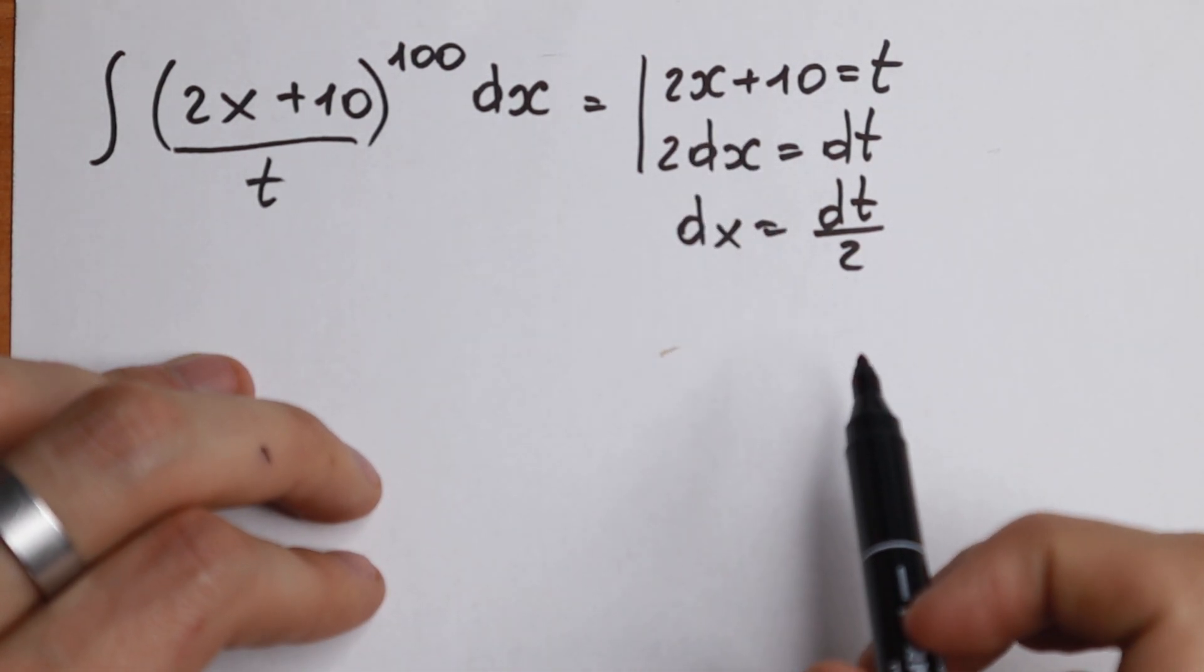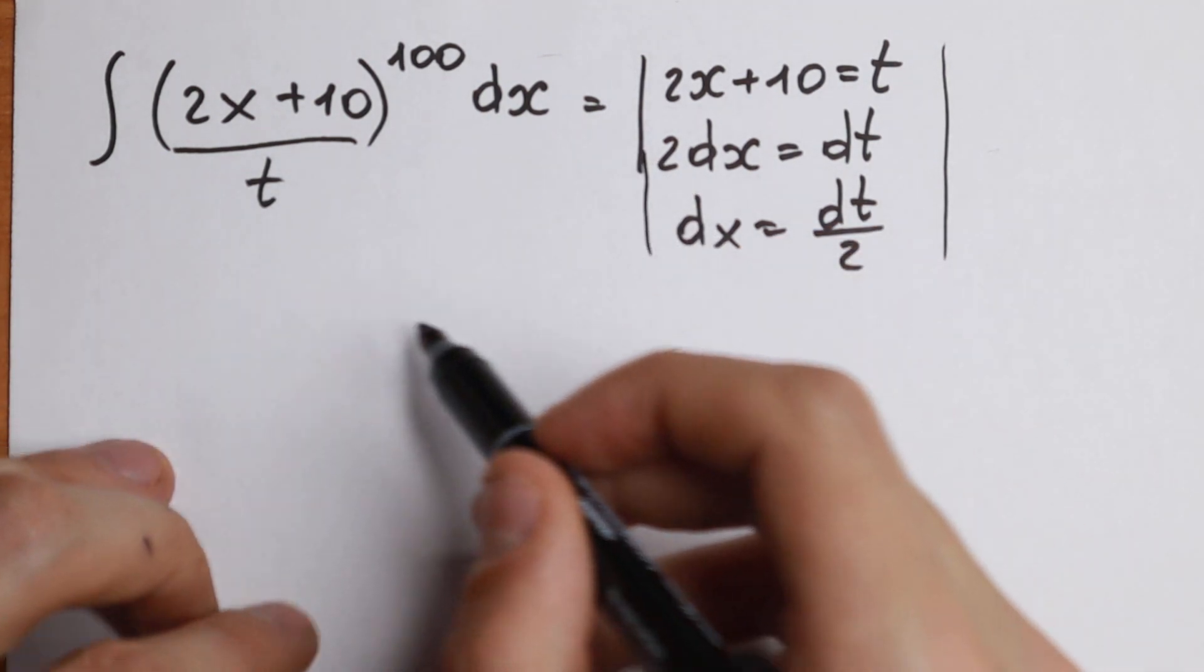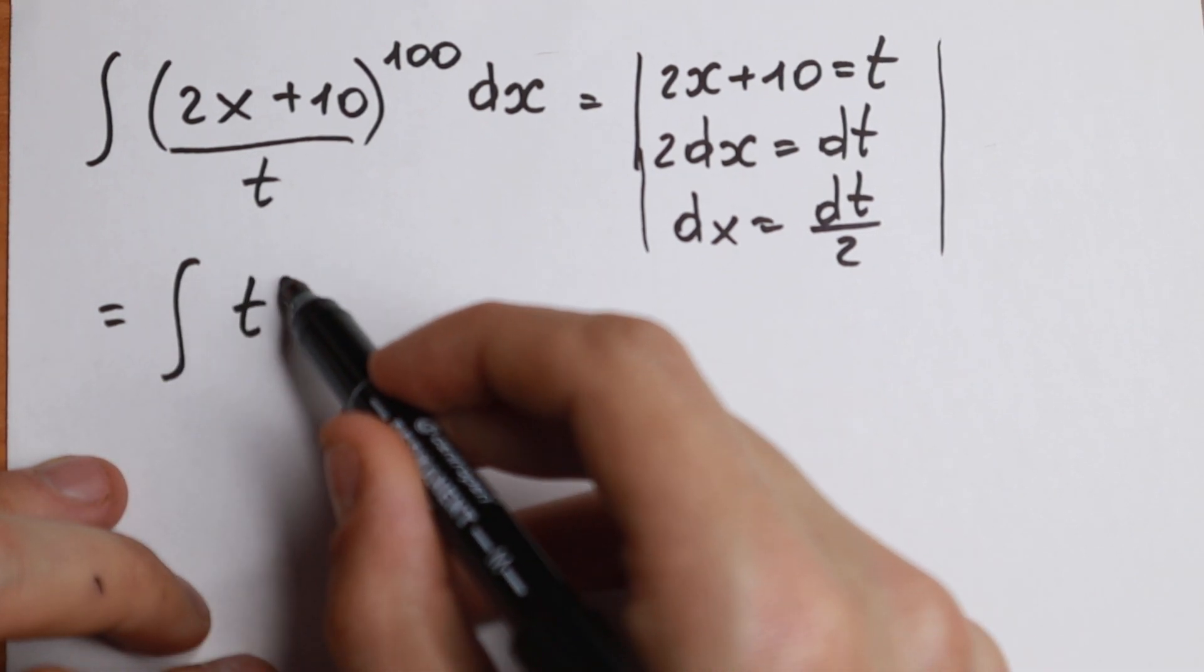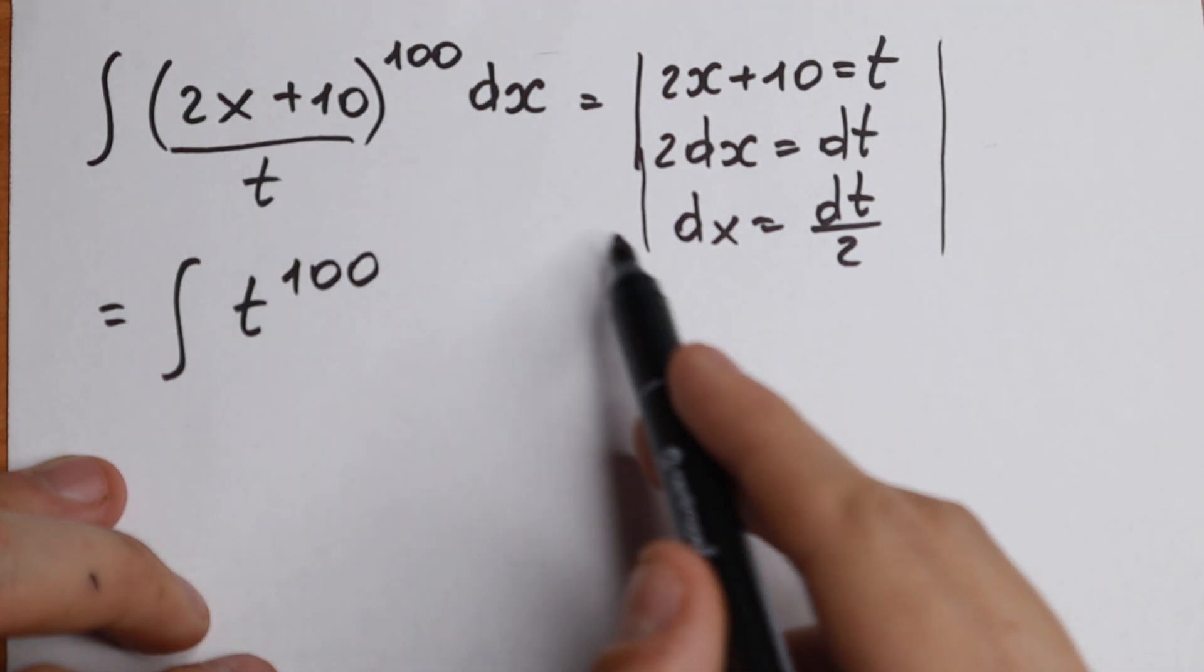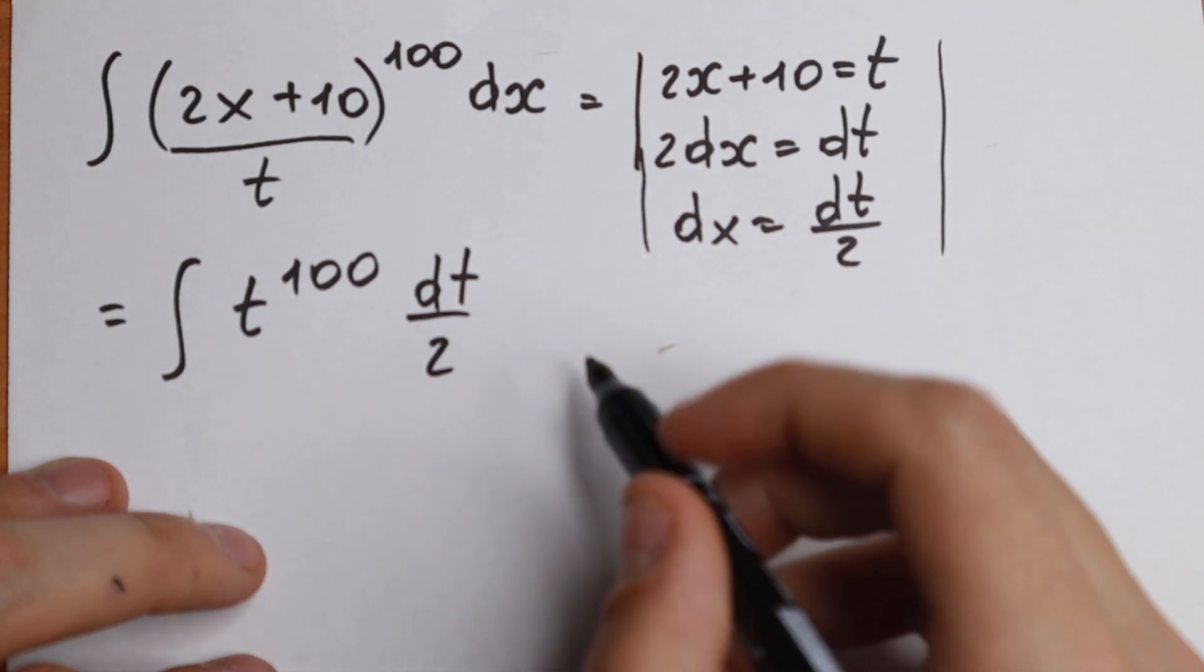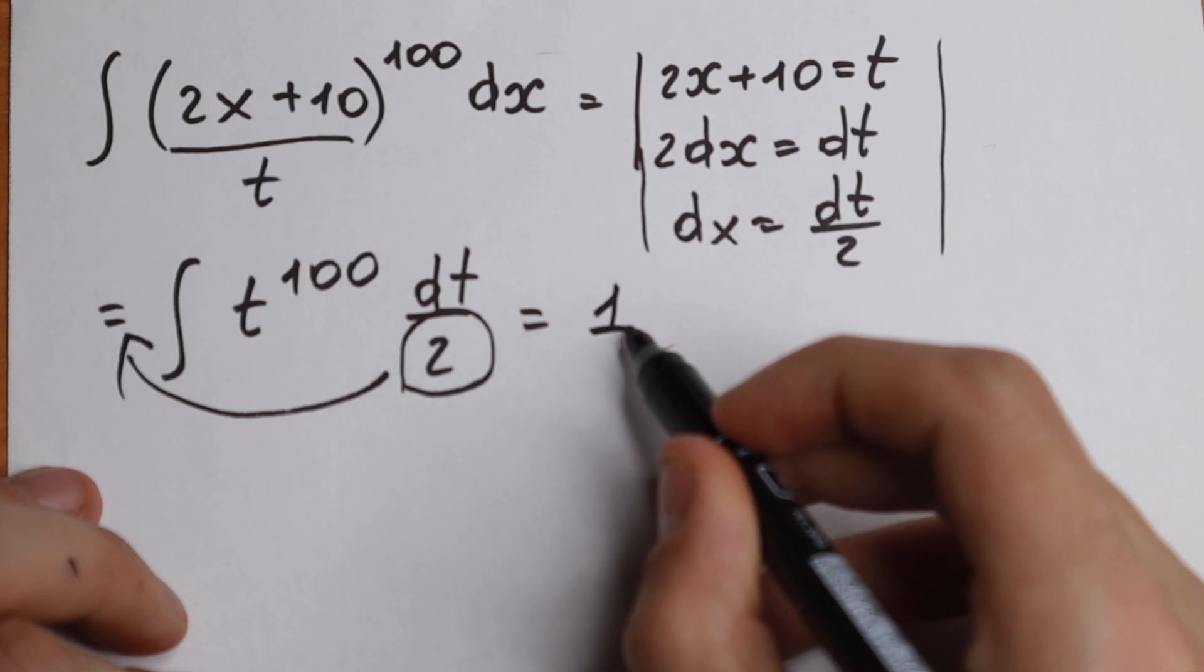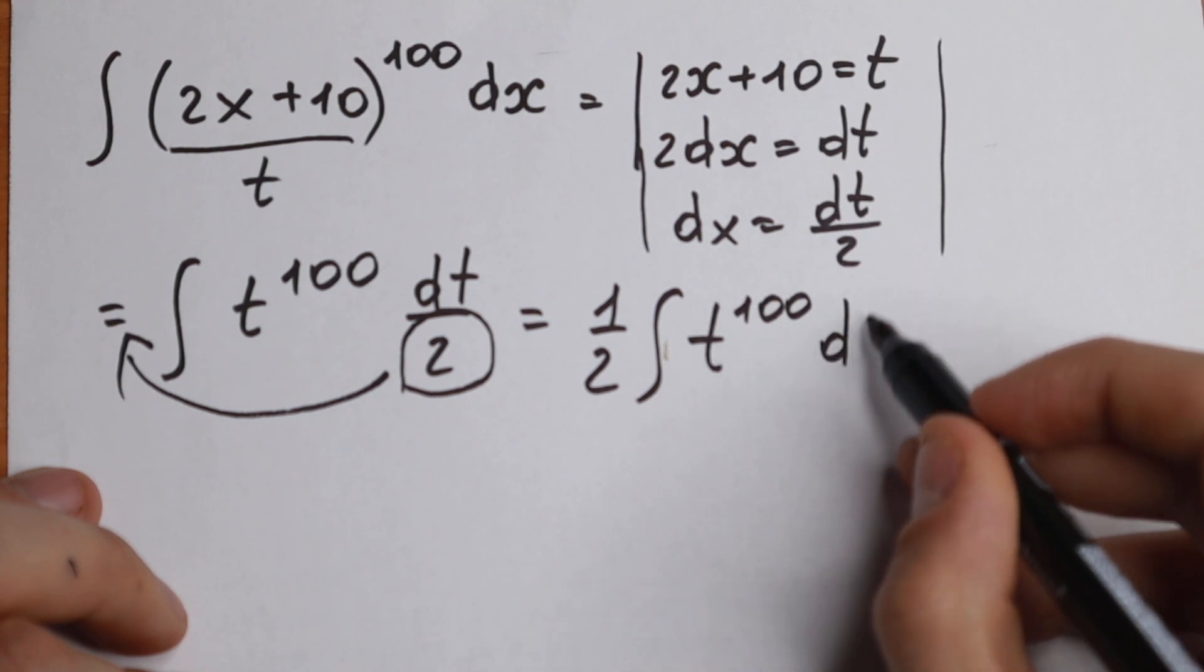So we have all substitution elements. So let's put all of these elements in our integral. How does this integral look like? Looks like integral of t to the power 100, because 2x plus 10 equal to t, and dx equal to dt over 2. So first of all, we have a constant right here, so we can factor out. We will have 1 half integral t to the power 100 dt.